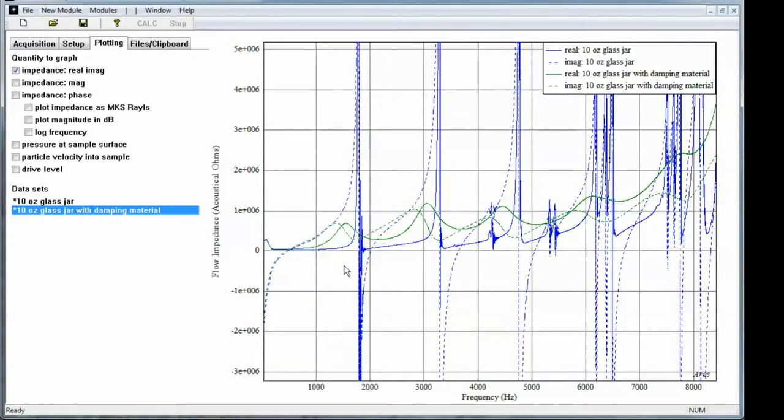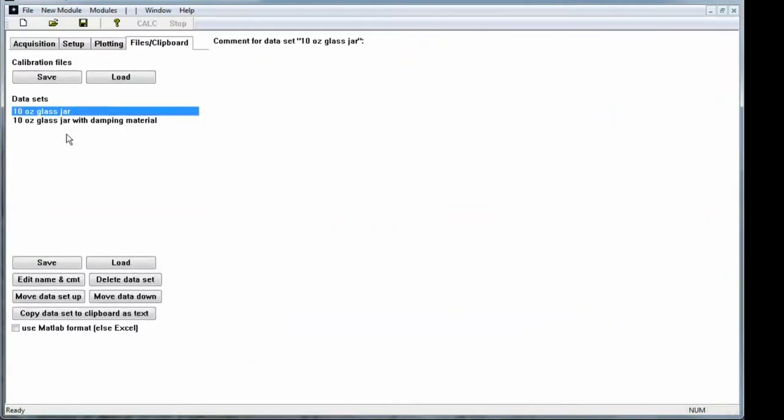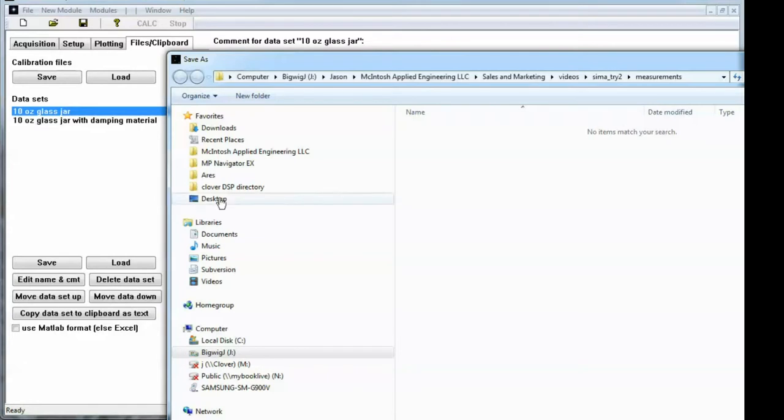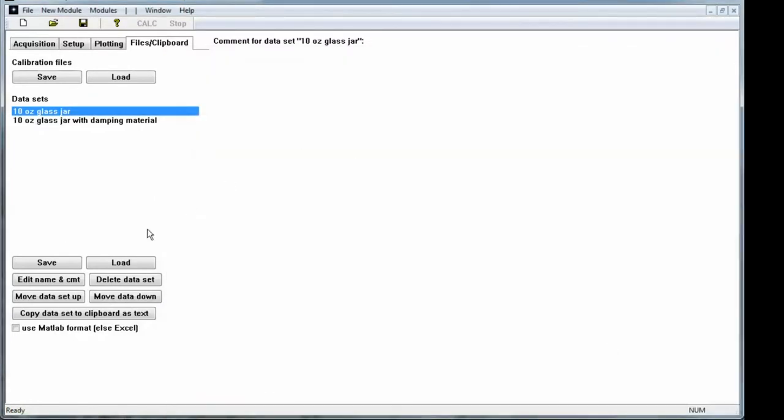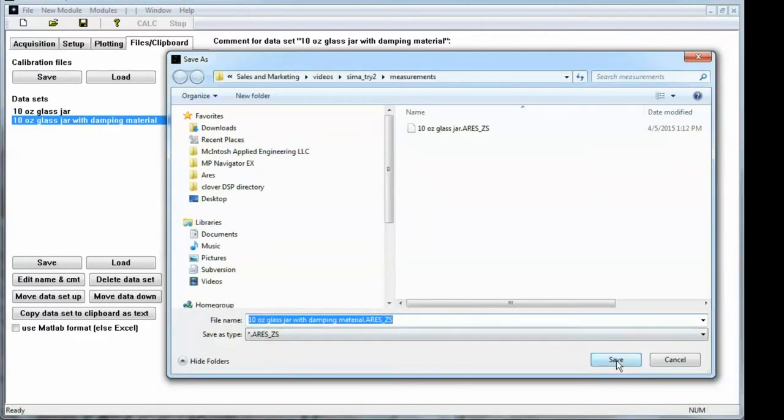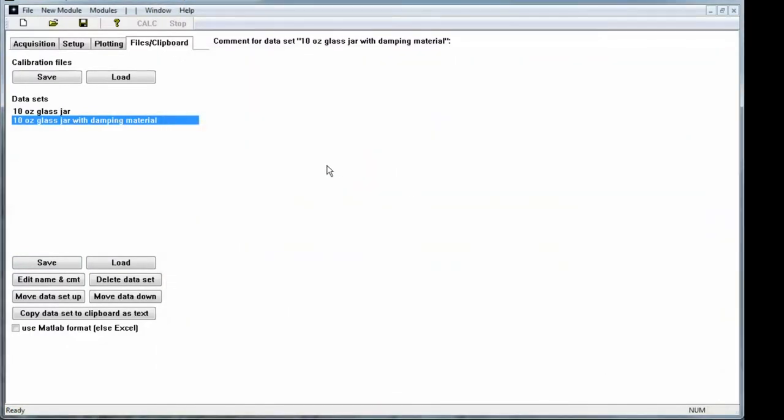Now I'd like to show what you can do with this impedance in mating it up with the modeler. So I'm going to export these impedance curves to some files. I'm going to go to the files clipboard tab, select save. And I'm just going to save them into this directory. Select the next one, save. And I'll hit save. So both of them have been exported to my directory.